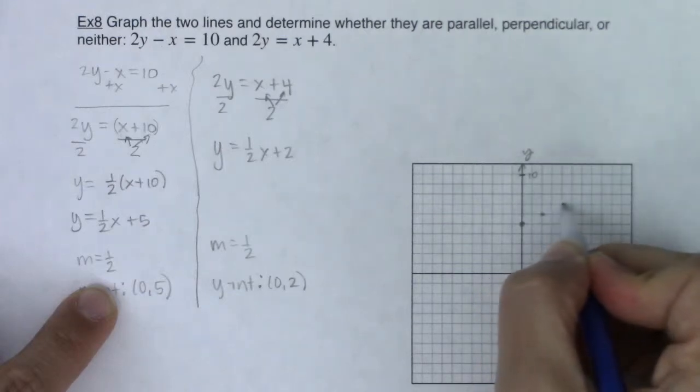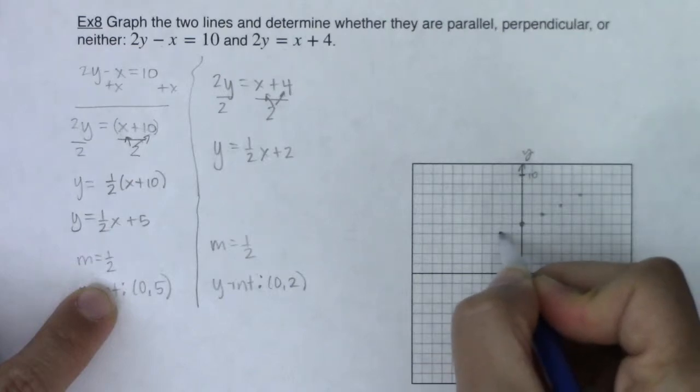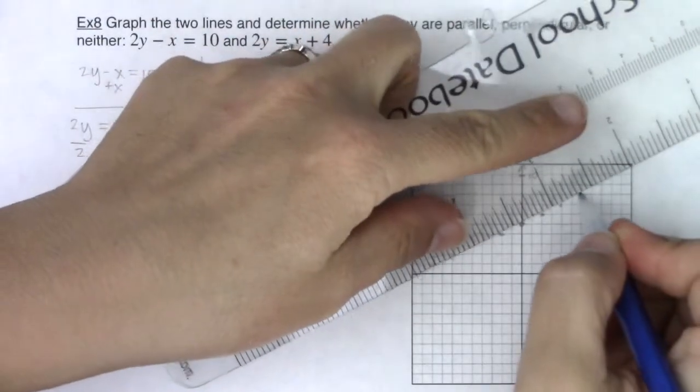So up 1, right 2. Up 1, right 2. I could also, if I want, go down 1, left 2. But as I do that, let me connect all these dots. It's a pretty good line. Looks something like that.